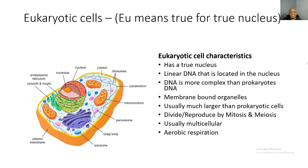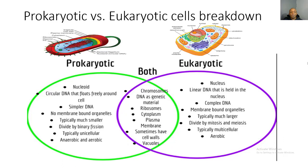Eukaryotic cells divide and reproduce by mitosis when making body cells, or through meiosis when producing sex cells. They are usually multicellular, meaning they usually have more than one cell. They require aerobic respiration, which means they need oxygen in order to survive and perform their daily functions.